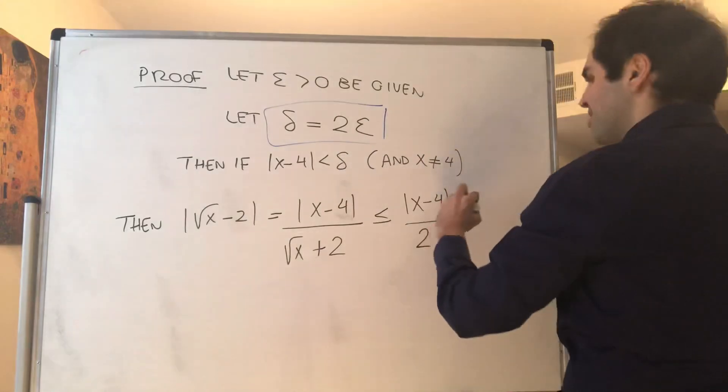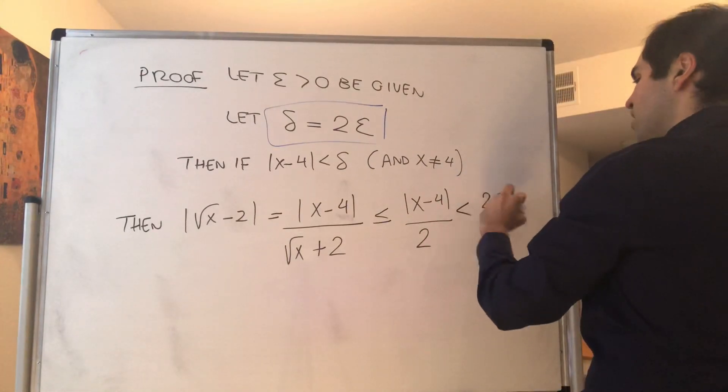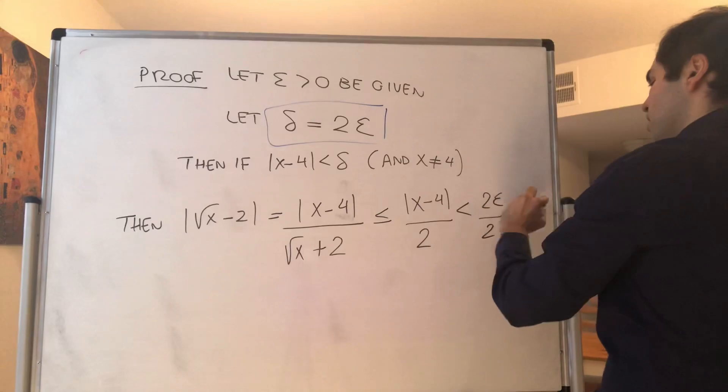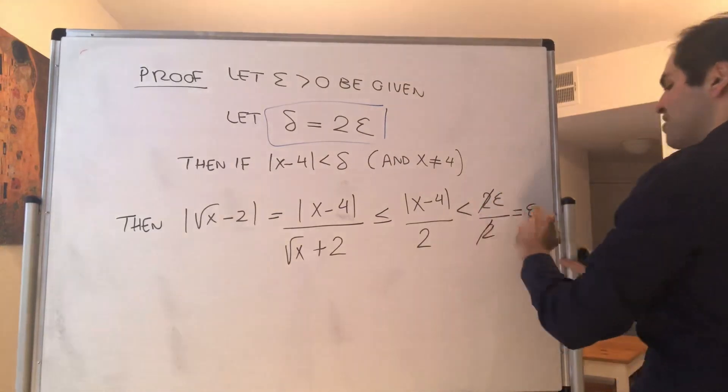But now, this is less than delta, so less than 2 epsilon over 2, and we get our satisfying epsilon.